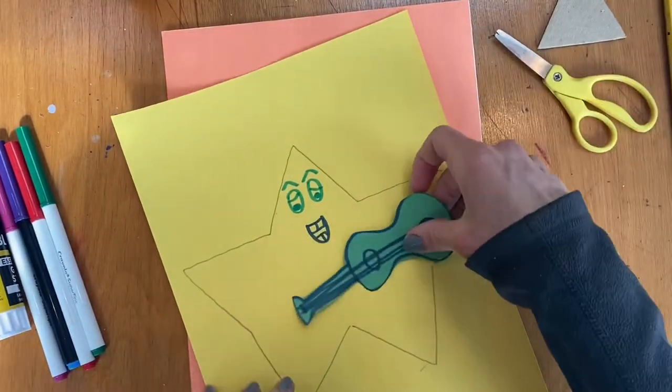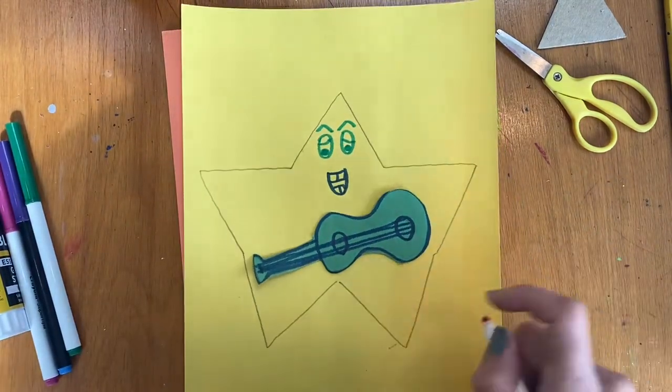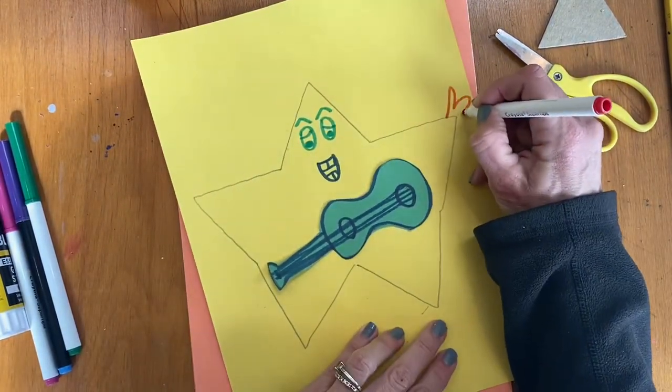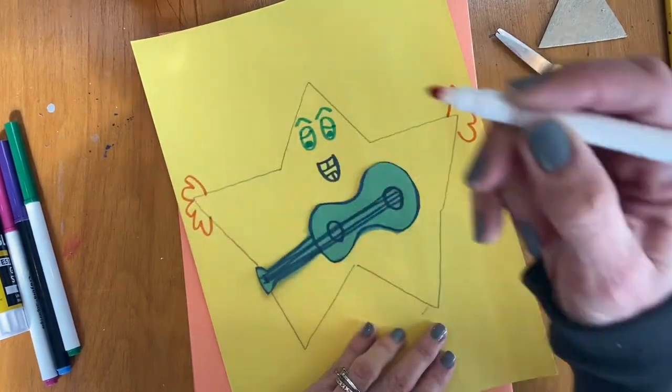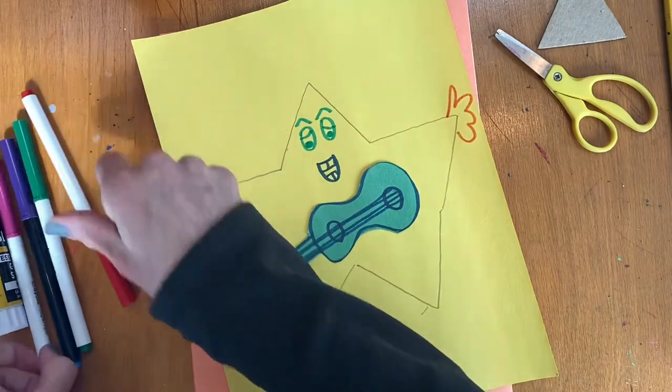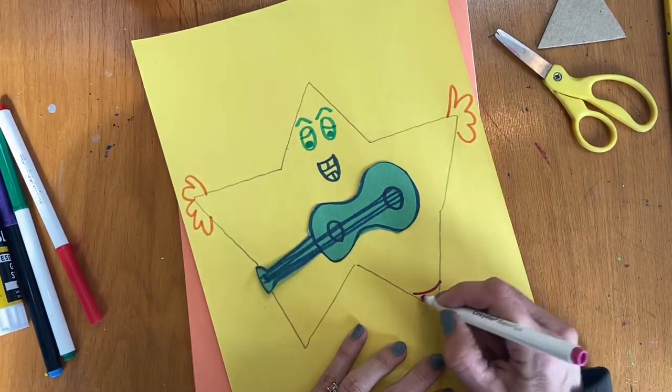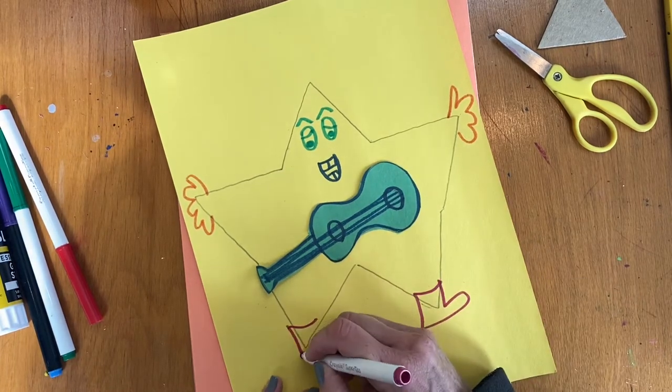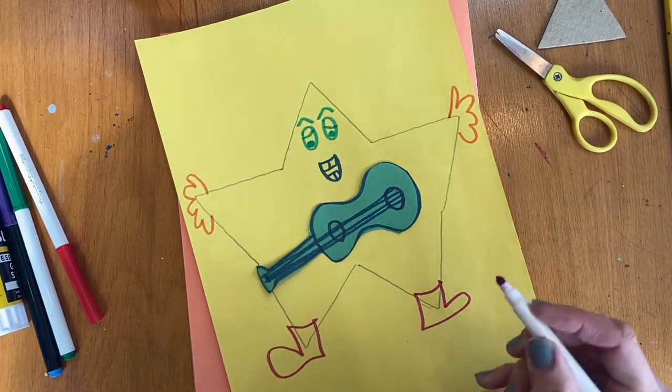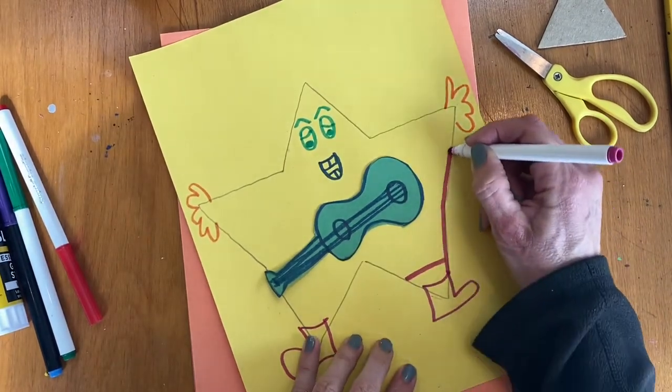Okay, he could be holding a guitar. I might use some other colors. Maybe I'm going to give him some hands. One, two, three, four, five. We can give him some feet. Let's see. Maybe I'm going to use, I'll give him some boots.